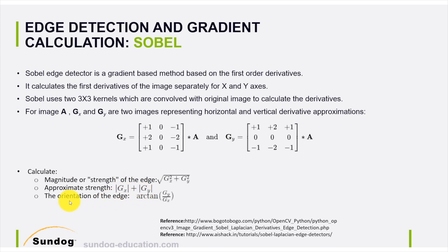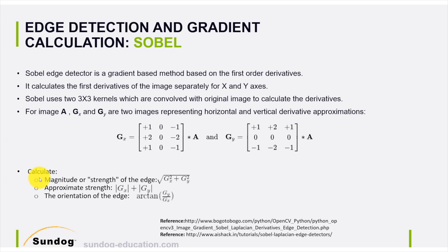We can also get an approximation of edge strength by summing the absolute values, or we can get the orientation of the edge — which is very important and used extensively in future projects — by computing the angle: arctan of (gradient in Y divided by gradient in X). So in summary: we apply two Sobel matrices to the image, Gx gives the gradient along x and Gy gives the gradient along y, then we mix them to get the magnitude and angle at each pixel.